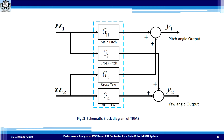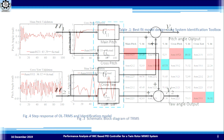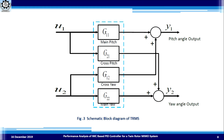The model identification of the Twin Rotor MIMO System consists of four best-fit models: two for the main dynamics path and two for the cross-coupling path. The main dynamic path from U1 to Y1 has gain G11 (main pitch gain), and U2 to Y2 has gain G22 (main yaw gain). The two cross-coupling paths are U1 to Y2 with gain G21 (cross pitch gain) and U2 to Y1 with the cross yaw gain. Since the TRMS is a non-linear system, we use the ARMAX model to linearize it via system identification.